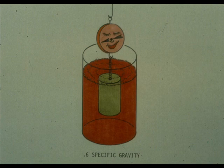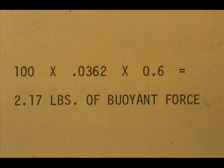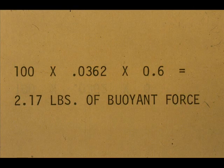What would the scales indicate if we suspended the displacer in gasoline, which has a specific gravity of 0.6? It would still displace 100 cubic inches of the fluid. The cylinder is buoyed up by a force equal to the weight of 100 cubic inches of 0.6 specific gravity liquid.